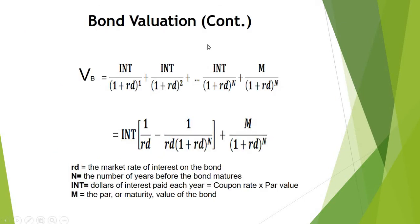Here is the formula of bond valuation. IND indicates the coupon payment of the bond, which is equal to coupon rate times par value. M indicates par value, face value, or maturity value of the bond. Rd indicates market interest rate. We can also use the second formula as a shortcut for bond valuation.